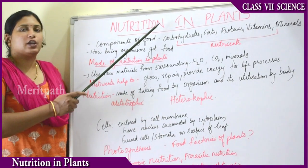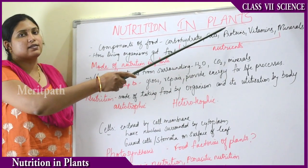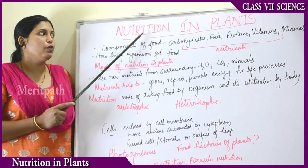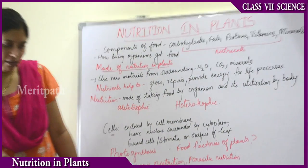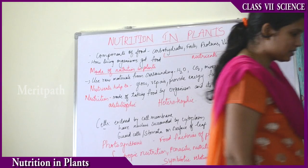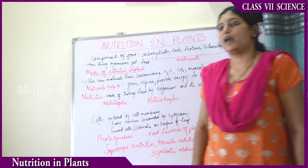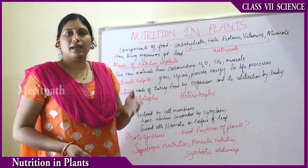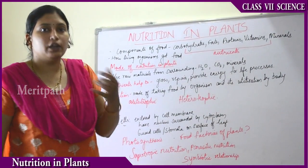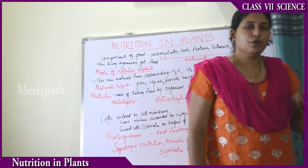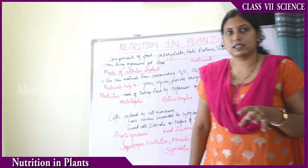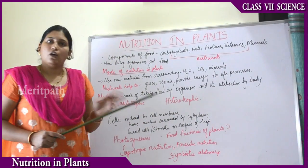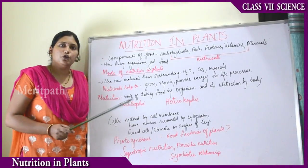Today we are dealing with a chapter called 'Nutrition in Plants.' Nutrition means the intake of food. Plants require food for their growth, as do human beings and animals. But plants sometimes make their own food, while sometimes they depend on others. Human beings and animals cannot prepare their own food — they have to depend on plants.